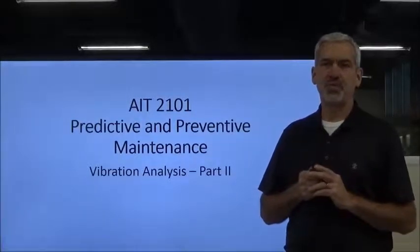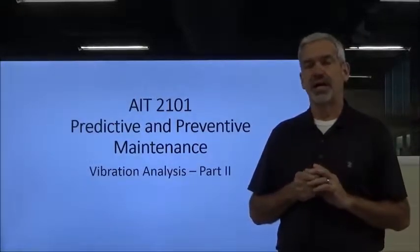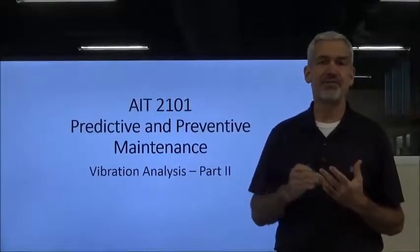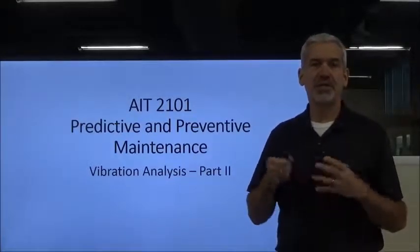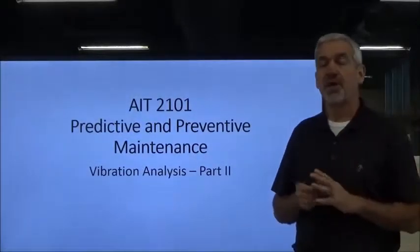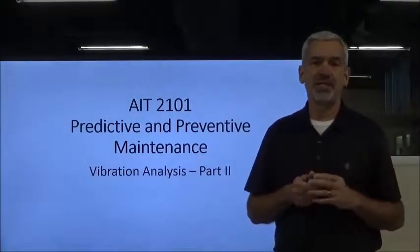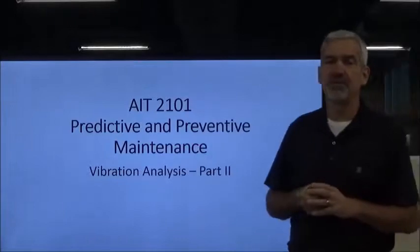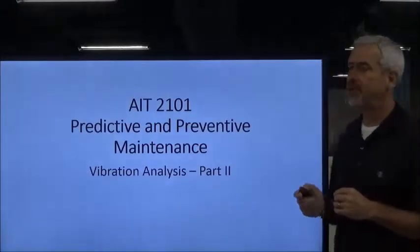Hey everybody, welcome back to AIT 2101. This is the second lecture in a series of vibration analysis lectures. In the first one, we talked about what vibration really was — basically the oscillation, or the moving back and forth, of a mass, typically on a machine, that creates a vibration. We talked about the four forces of vibration: the excitation and the other three that oppose it. We're going to dig a little bit deeper into what vibration is and how it impacts the machine, so let's move forward with vibration analysis, part two.